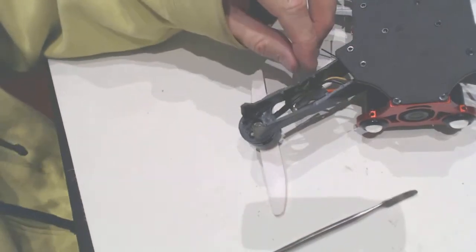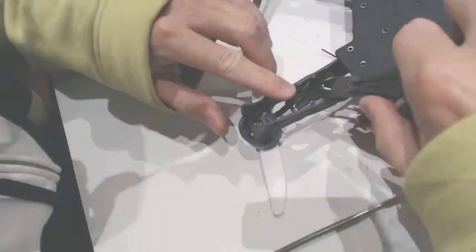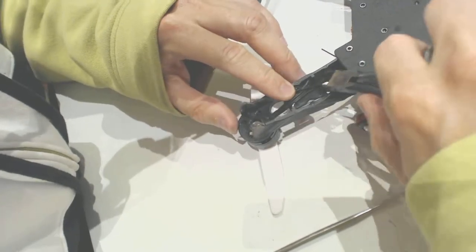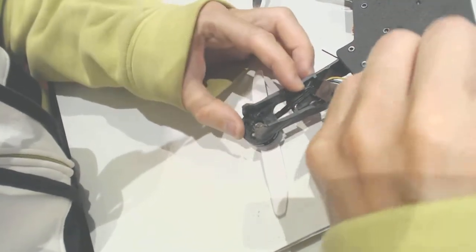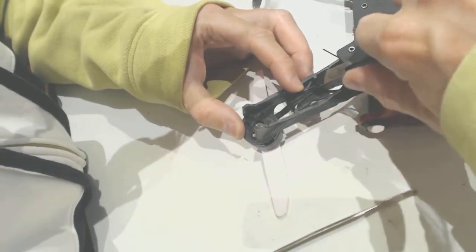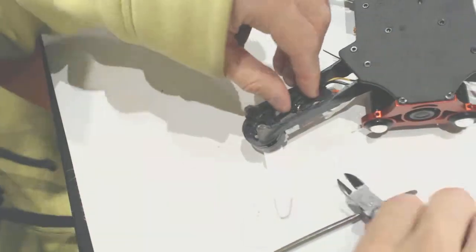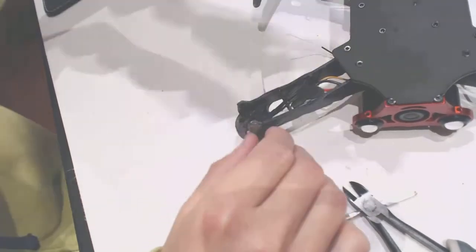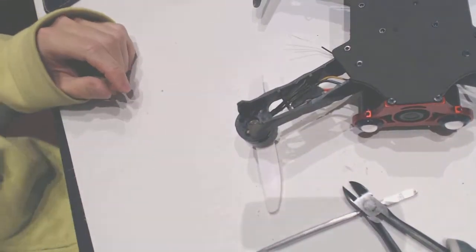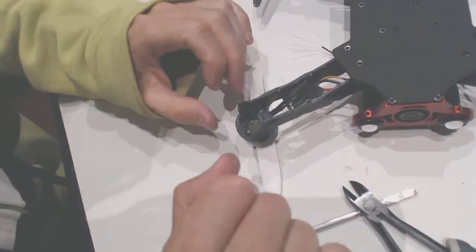By the way we need to cut the zip ties here because they are kind of in the way. Okay. Zip ties cut. So yeah, a good lesson is not to fly near the sand, near the beach.